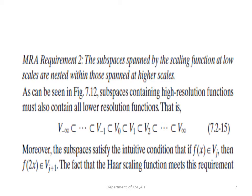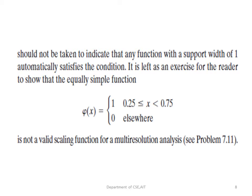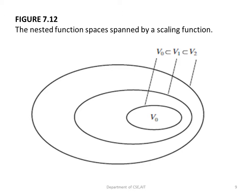The second requirement is that subspaces spanned by the scaling function at low scales are nested within those spanned at higher scales. High resolution functions must contain all low resolution functions — that is, V(−∞) ⊂ ... ⊂ V(−1) ⊂ V(0) ⊂ .... The basic condition is: if f(x) belongs to V(j), then f(2x) should belong to V(j+1). This picture illustrates V(0) ⊂ V(1) ⊂ V(2), the nested function spaces spanned by a scaling function.